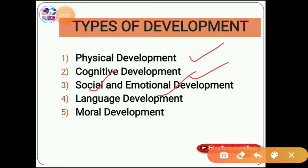The fourth type is language development. Language is the interaction with one another through various means or methods of communication — writing, speaking, sign language, etc. It is an important medium of communication and uses words and symbols to express the thoughts, desires, and expressions of one individual to another. The fifth type is moral development, which deals with the development of ethics, ethical norms, values, and the ability to judge and act morally. This gradually develops as a person matures.